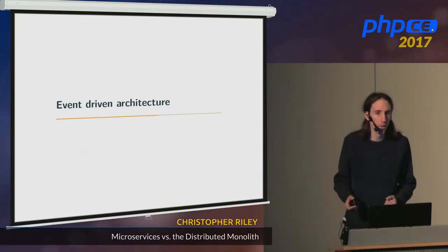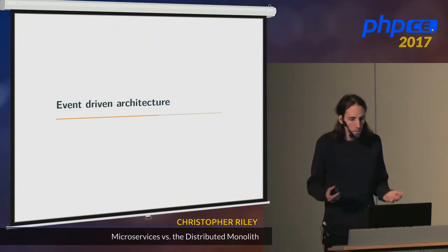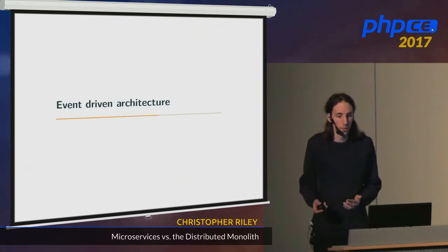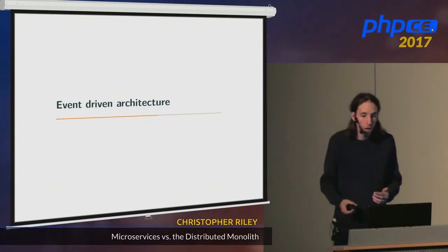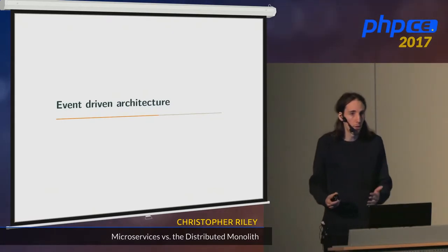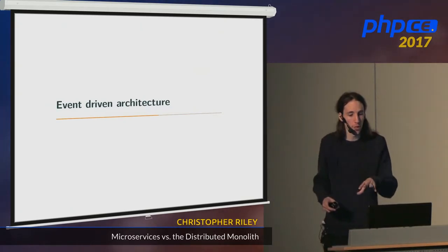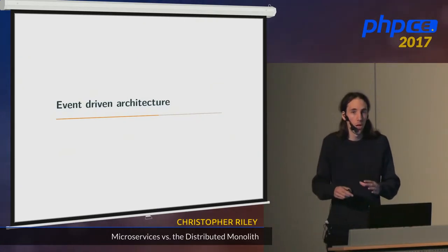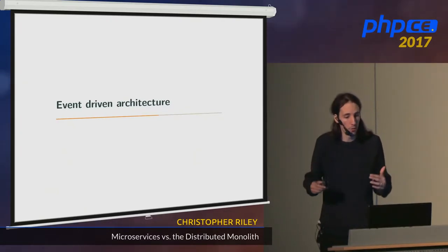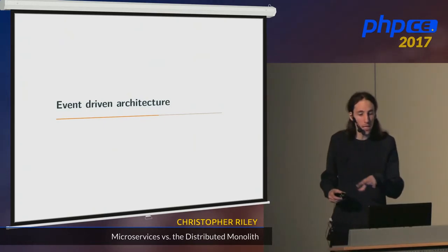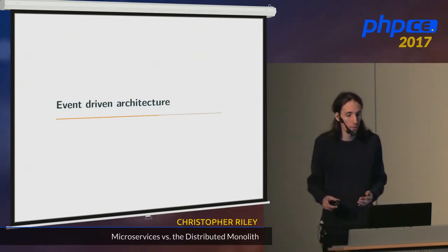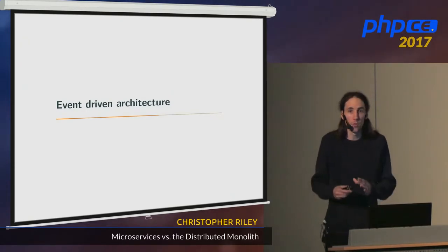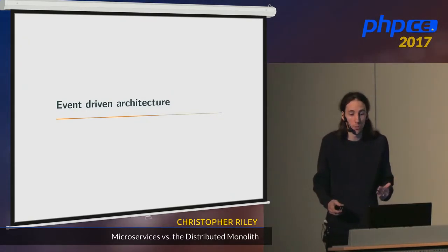Does that sound familiar? You might recognise this idea of representing state as a sequence of events that happened — from event sourcing, which was a talk earlier in the conference. The main difference between event sourcing and event-driven architecture is the scale: event sourcing focuses on the state of a single model, whereas in event-driven architecture we're concentrating on exchanging state between services at a higher level. It isn't necessary to use event sourcing in each microservice to take advantage of event-driven architecture.